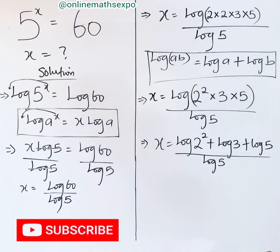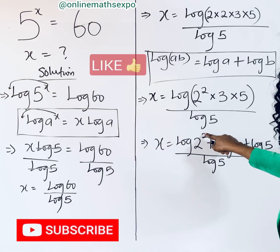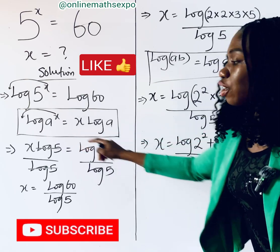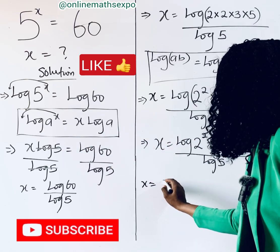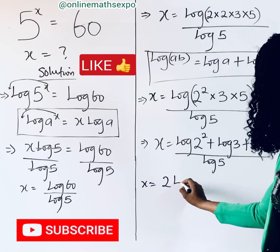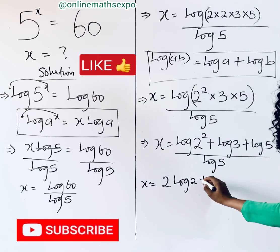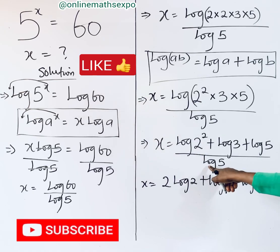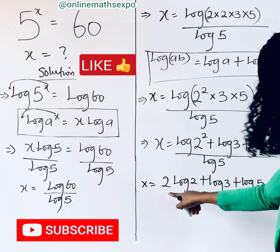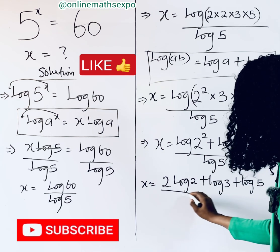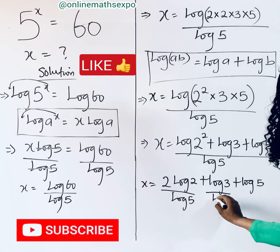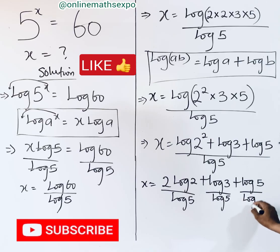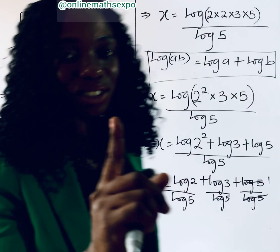Remember that the power multiplies the log, so log(2²) becomes 2 · log 2. We now have x = 2 log 2 + log 3 + log 5, all divided by log 5. Since log 5 is the denominator, we can split it and divide each term by log 5. Notice that log 5 divided by log 5 gives 1.